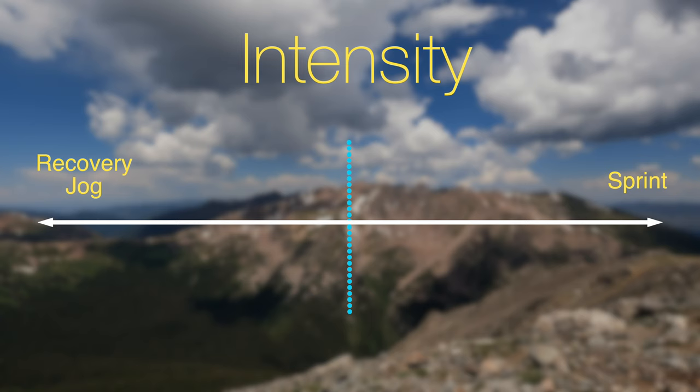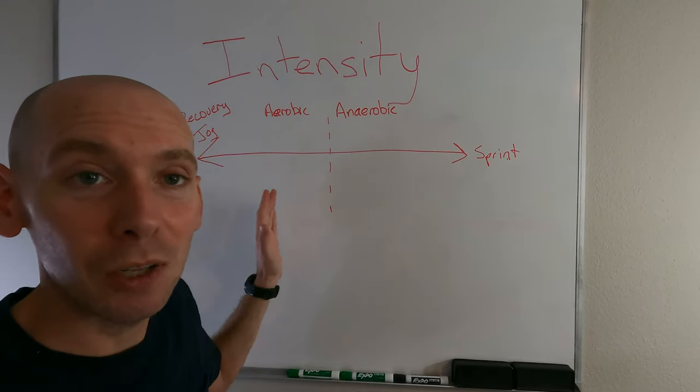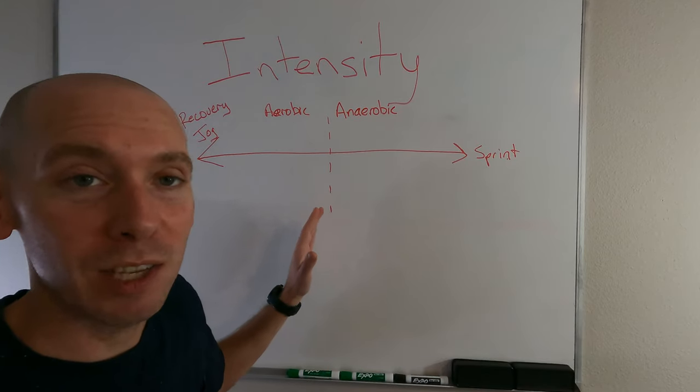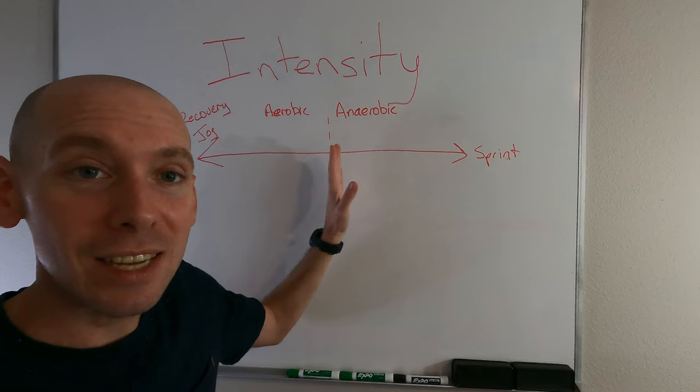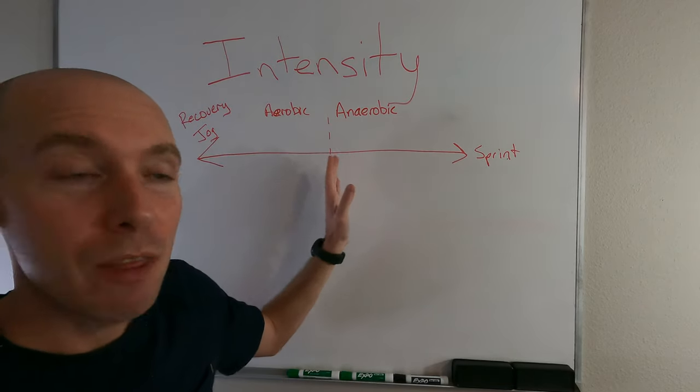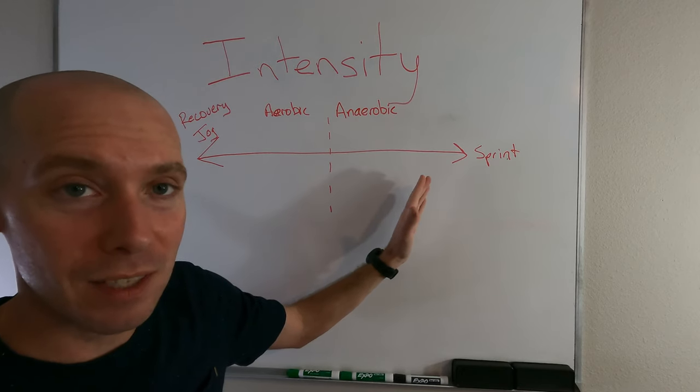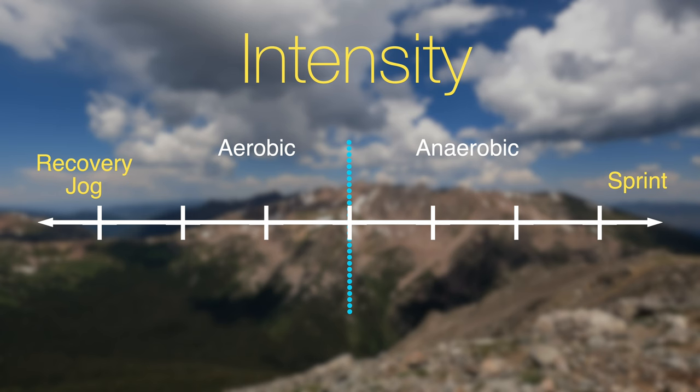Right in the middle, we have the dividing line between running aerobically and running anaerobically. Now we can also plot what paces fall and where they fall along the spectrum. Let's also differentiate that not the entire side of this spectrum is going to be anaerobic. There's a certain intensity that gets so fast that it's not even anaerobic anymore. This very end of this spectrum here is alactic.